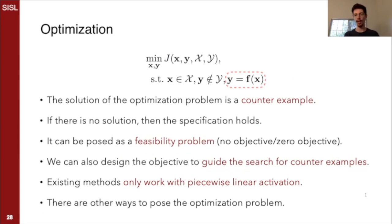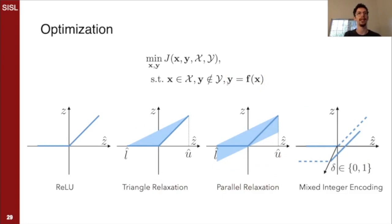I do also want to briefly mention how the optimization approaches work, which is that we define an optimization problem with some objective and the constraints that x must lie in the input set X, y must not lie in the output set Y, so we're in search of counterexamples, and yet y is f(x). So if all these three constraints hold simultaneously, we have found a counterexample. And we can define this as a feasibility problem with no objective, or we can use the objective to help guide our search. This in particular here, y equals f(x), is quite tricky to define. And the reason is that ReLU is a non-linear, non-convex operation.